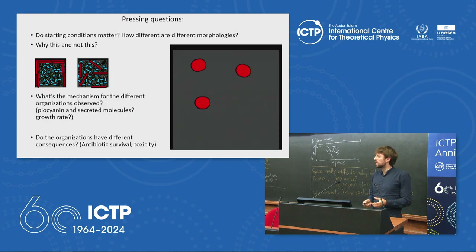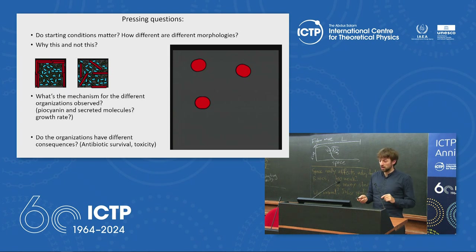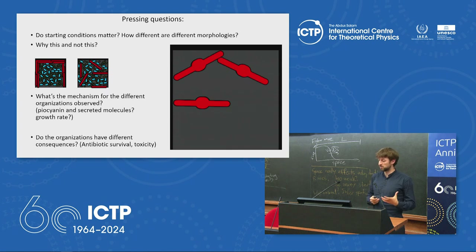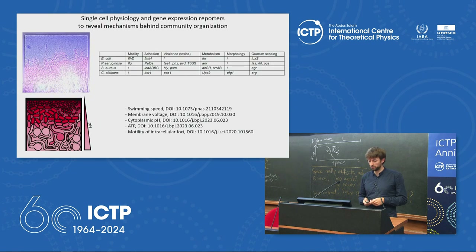To better understand what's going on and how much depends on mechanics and growth rates alone, I teamed up with Aiden Brown and Bartek Waclaw in Edinburgh, who use agent-based modeling. We're trying to understand whether 2D shapes alone can lead to the formation of the different organizations I've shown.